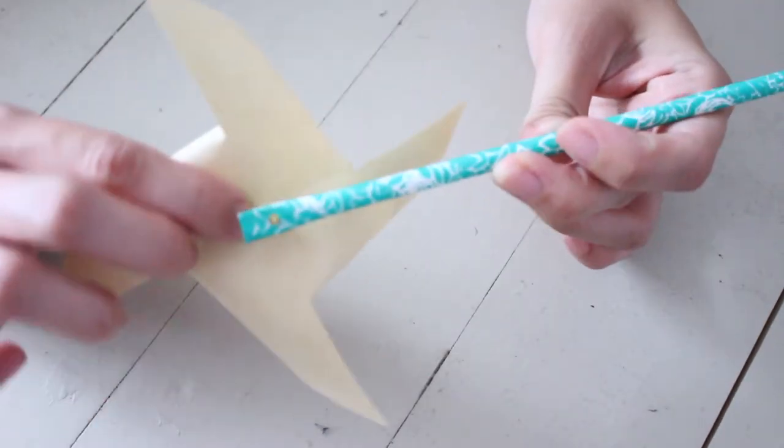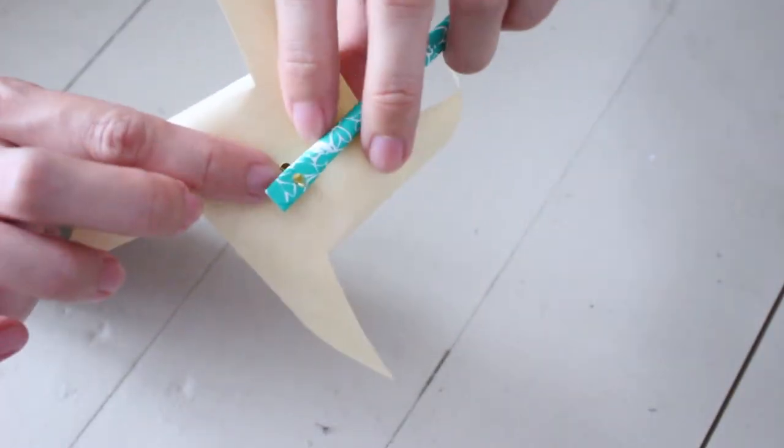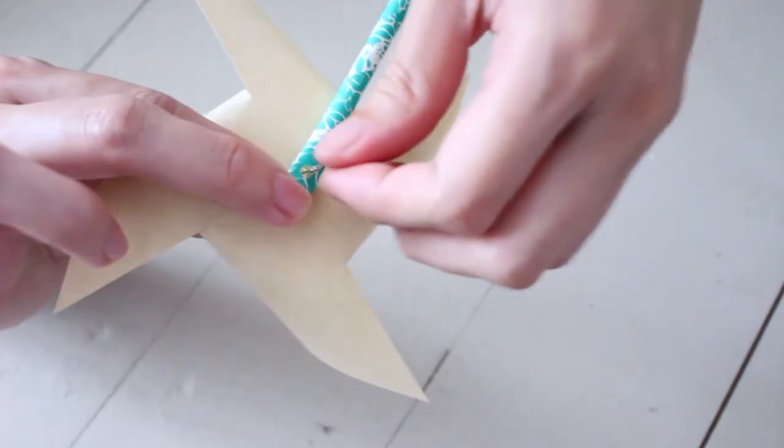Next, add the straw. Create a gap between the paper and straw, then split the legs of the fastener.